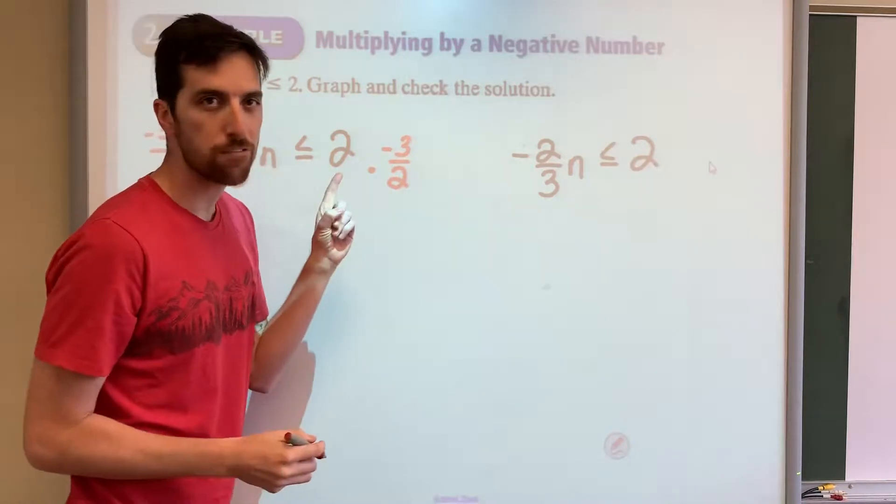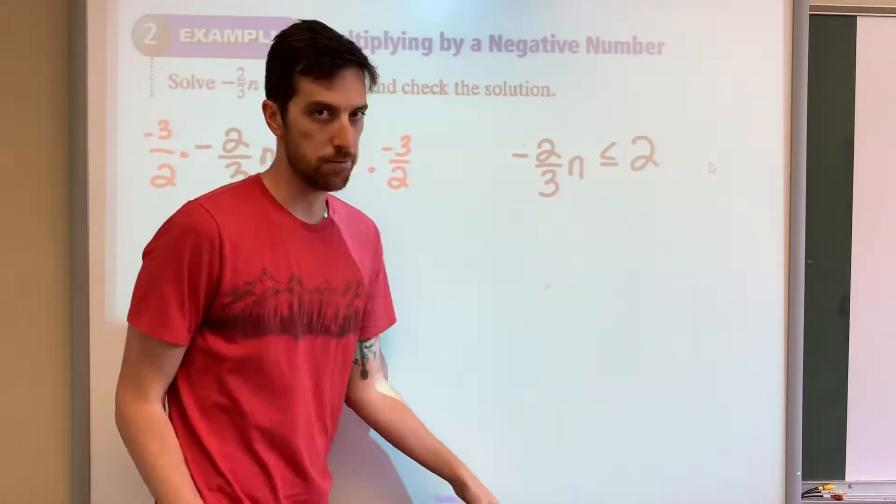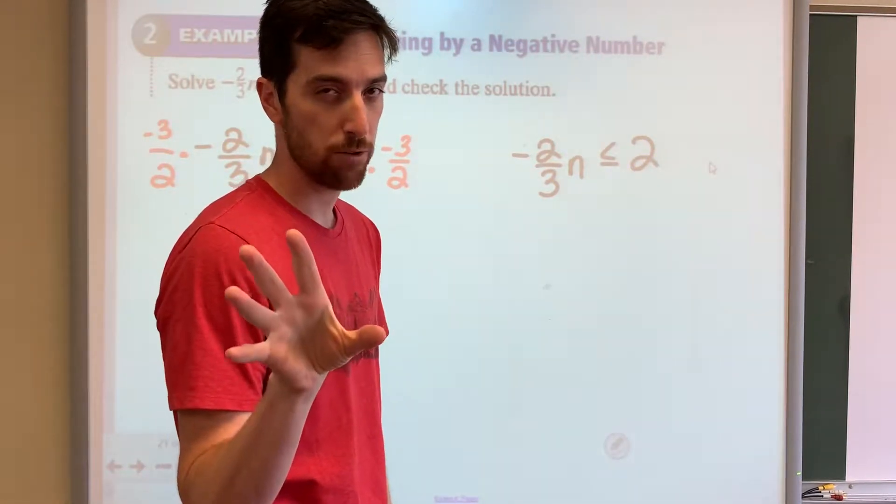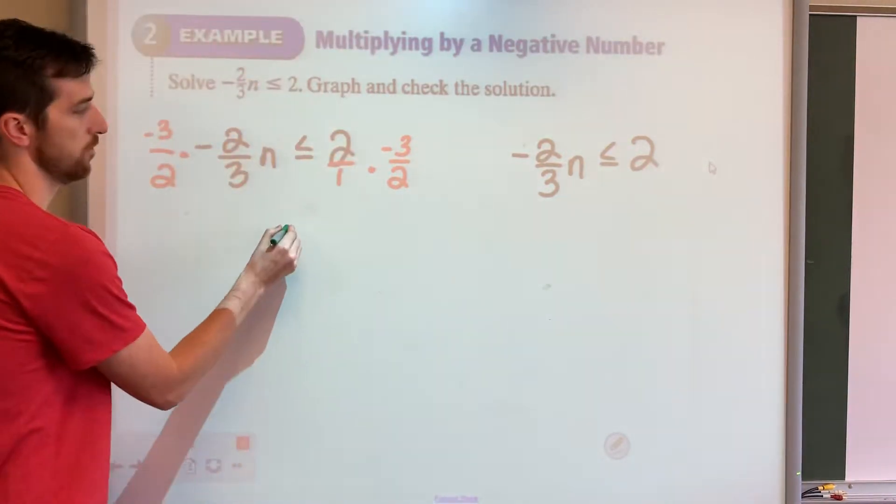Now remember, 2 is a fraction. It's 2 over 1. Keep in mind, I'm trying to trick you here. We multiplied both sides by a negative. We got to flip that inequality sign. Now it's going to be going this way.